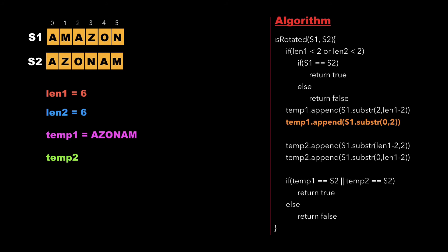Similarly we also create a left rotation by appending the last two characters of the string s1 which are on and then we append the first four characters which are amaz.